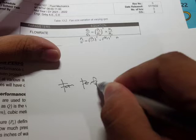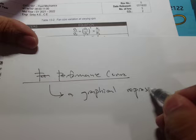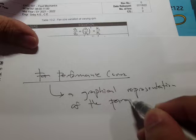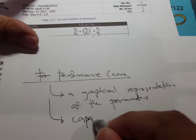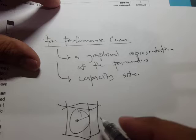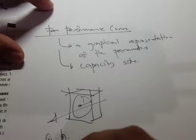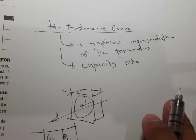Let's continue our discussion regarding fan performance curves. A fan performance curve is a graphical representation of the parameters on the capacity side. For a given fan diameter and speed, there is already a capacity in terms of static pressure and flow rate — these are the two most common parameters we use.